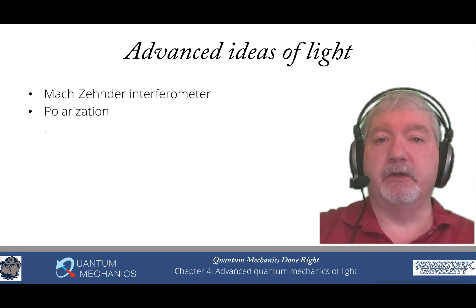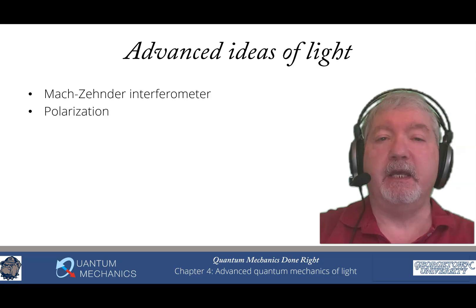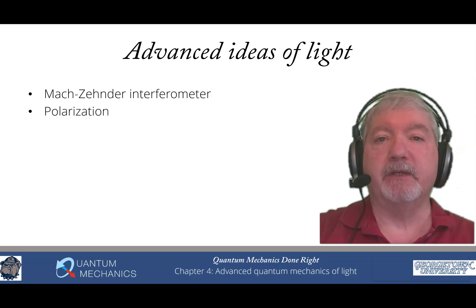We then describe an extra degree of freedom of light called polarization. By manipulating the spatial dependence or the spatial state of light along with its polarization you can create entangled states and this allows you to do the watched experiments of a two-slit experiment without disturbing the photon at all.